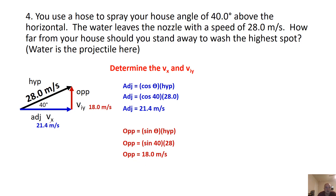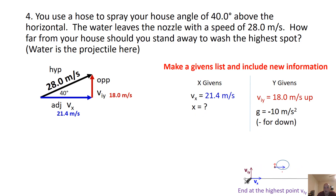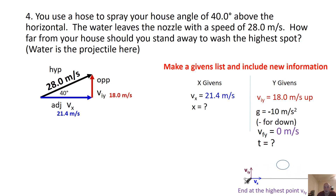We populate the triangle — VX there and VIY there — and plug into our givens list: VX is 21.4, VIY is 18, gravity is negative 10, positives up and negatives down. The question asks how far from the house you should stand to wash the highest spot. That means we're only talking about the water reaching that highest point, where the final Y velocity is zero. We need to find the time to reach that point.